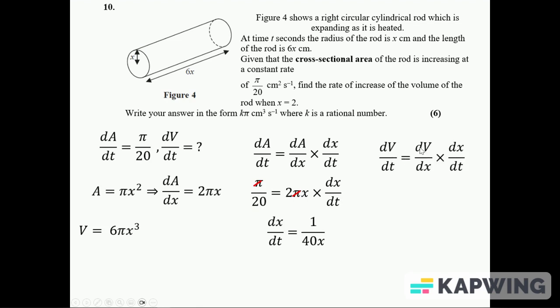Then do the same sort of thing with the V. I've got dV over dt here on the left-hand side, but I've got dx's on the top and the bottom. The dV over dx I need to know, but I can get that from the formula for the volume. Differentiating, three goes in front, power one less.